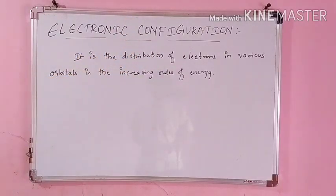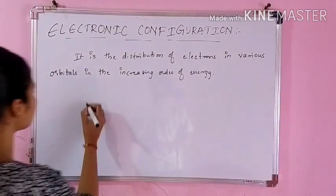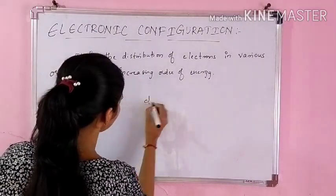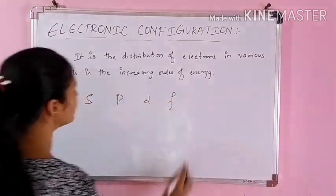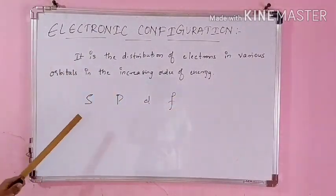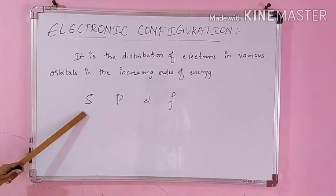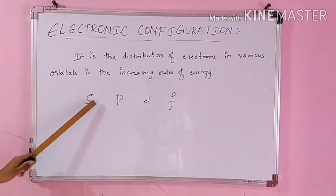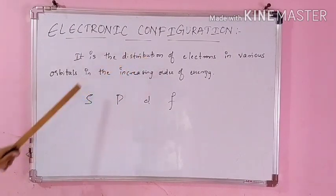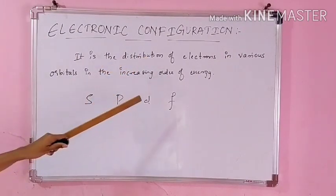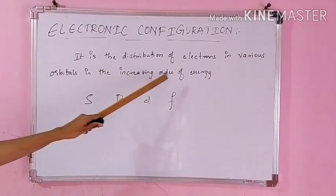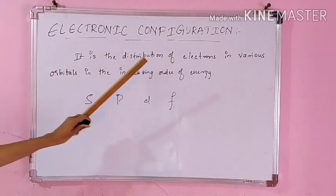Your orbitals are nothing but — which are those orbitals? You have S, P, D, F — isn't it? These are called orbitals. You have already learned it. So, in these orbitals, how your electrons are to be filled — they are filled in the increasing order of the energy.